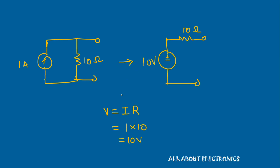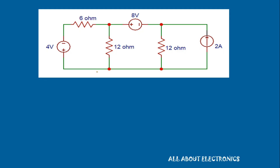Now let's take a numerical example to find the usefulness of source transformation in simplifying a circuit. We have a circuit in which we need to find the voltage across a 2A current source. Let's call this voltage Vx. Just by looking at the circuit, it looks a bit complicated, but using source transformation we can easily find the voltage across this 2A current source.